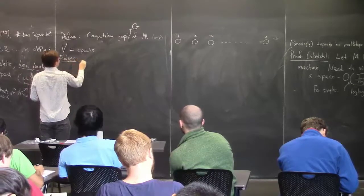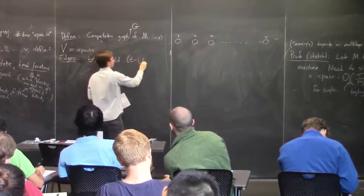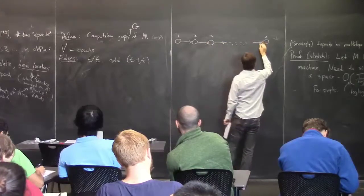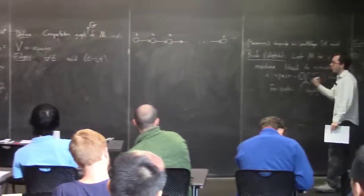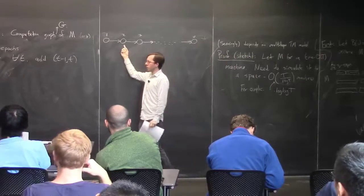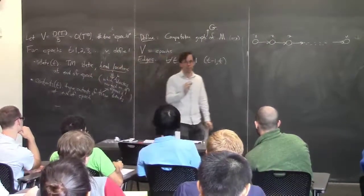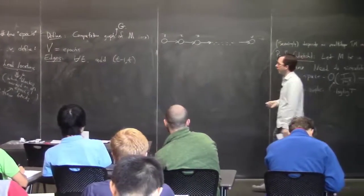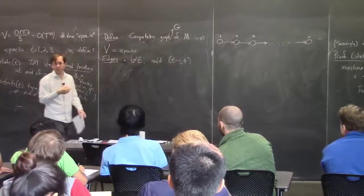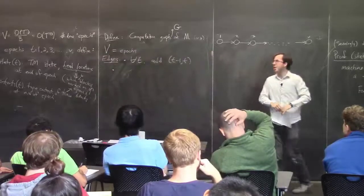What are the edges? There are two kinds. First, for all t, add the edge (t−1, t). This represents the fact that in order to simulate epoch t, you need to know what happened in epoch t−1 — specifically the Turing machine state and head locations. But since we're thinking about low-space simulation, this is very little information: O(log T) bits, since head locations are between 1 and T and can be written in log T bits.